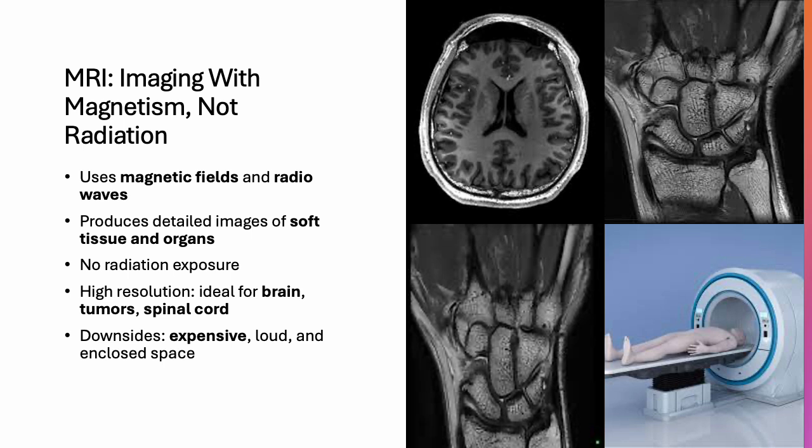MRIs don't use X-rays — they use magnetic fields. This makes MRI safe for repeated use and great for imaging soft tissues like the brain or joints. However, patients must stay in a narrow, enclosed space for a long period of time, which can be challenging for some. MRI produces high-resolution, detailed images of soft tissue and organs, making it ideal for brain tumors and spinal cord imaging. The downsides are that it is very expensive and loud.